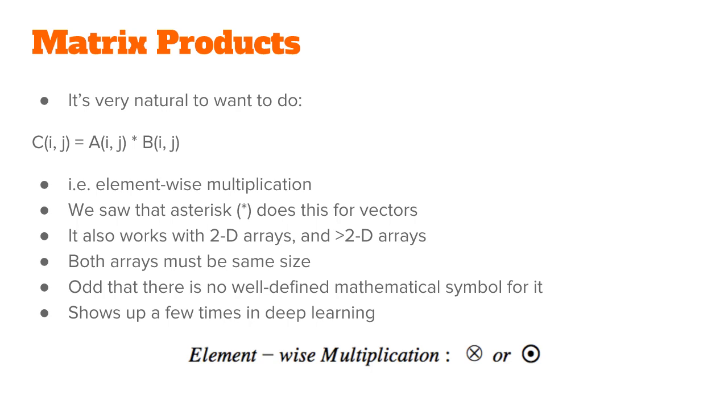As you can imagine, for 2D arrays, the asterisk also does element-wise multiplication. That means when you use the asterisk on multidimensional arrays, both of them have to be the exact same size.